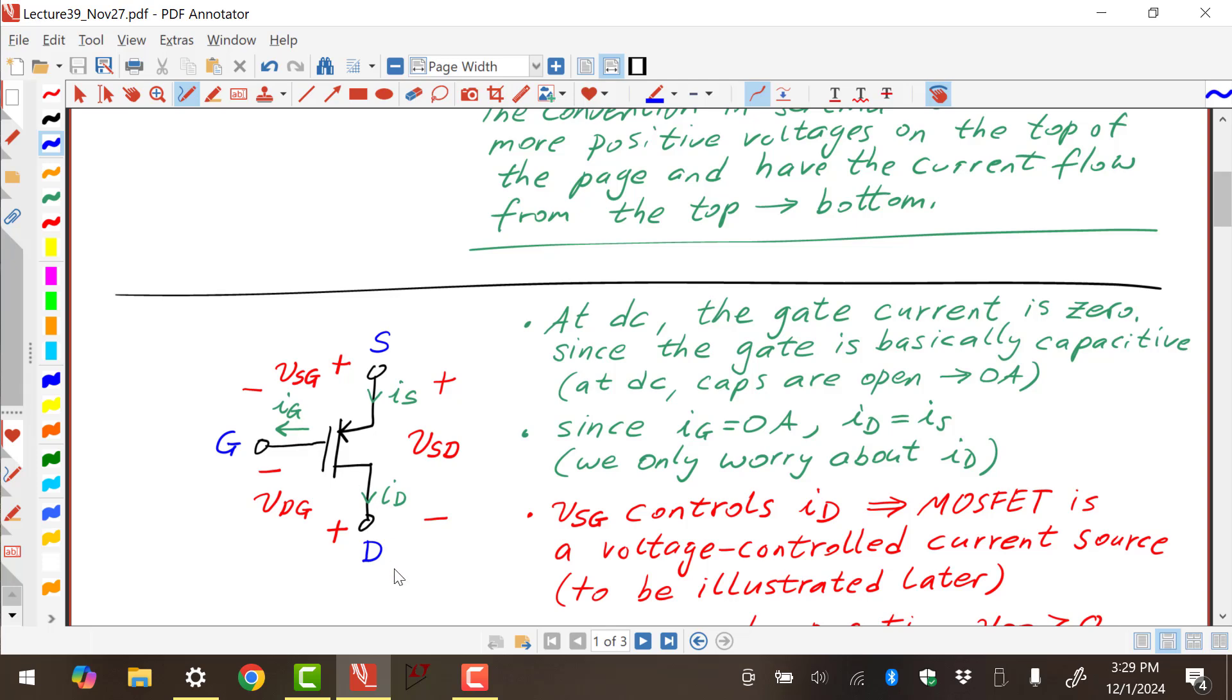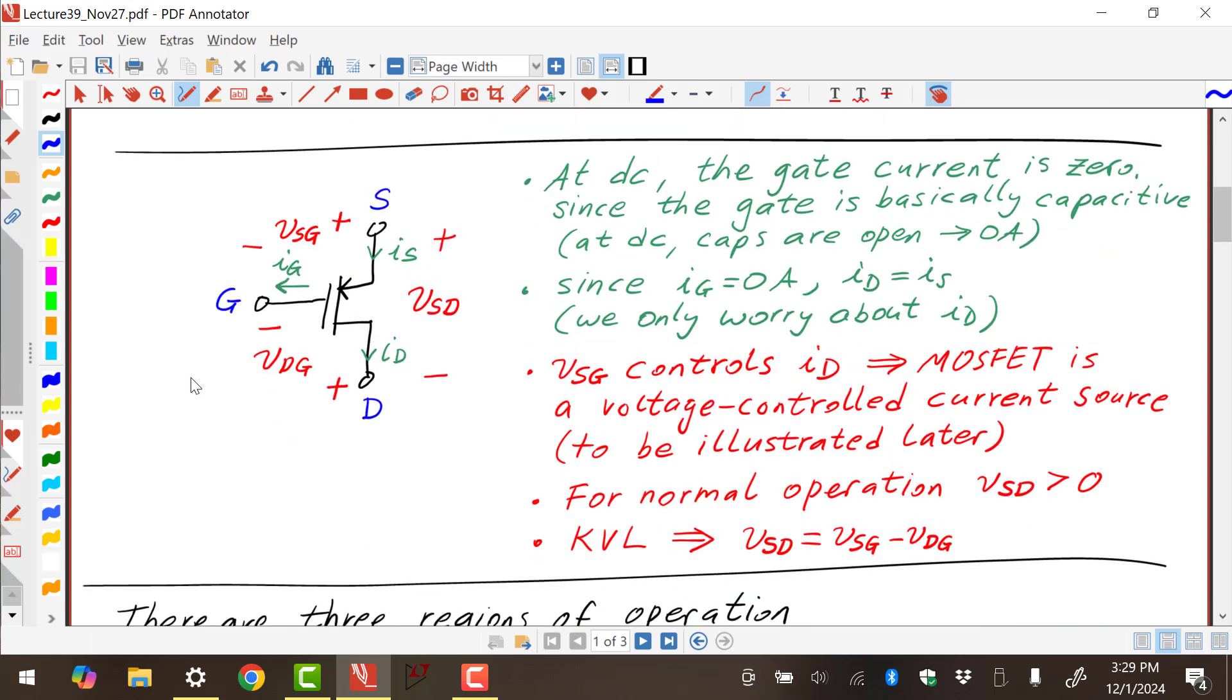For normal operation, VSD is greater than zero. Source is greater than the drain, and the current flows top to bottom, as shown. And of course, VSD, VSG, and VDG are related by KVL. So if you know two out of the three, you know the third one from just KVL. Also, KCL just says that IS equals ID because IG is zero. So if we know IS, you basically know ID.